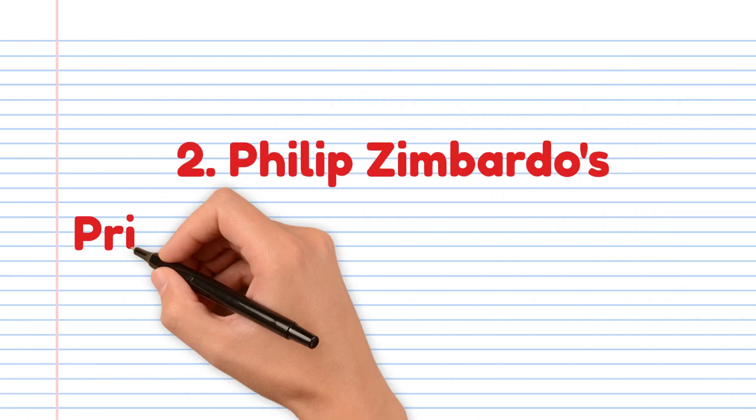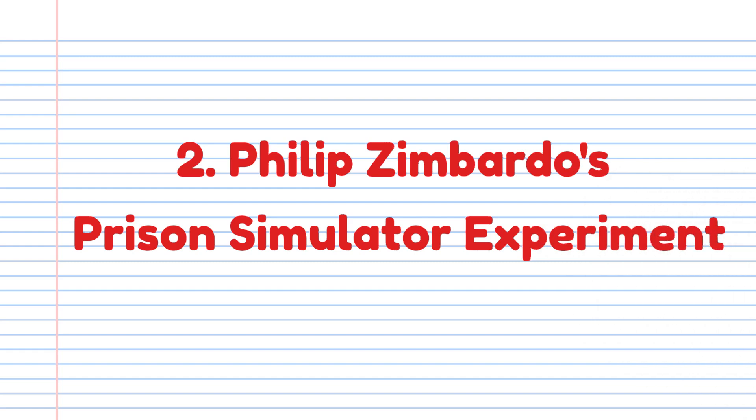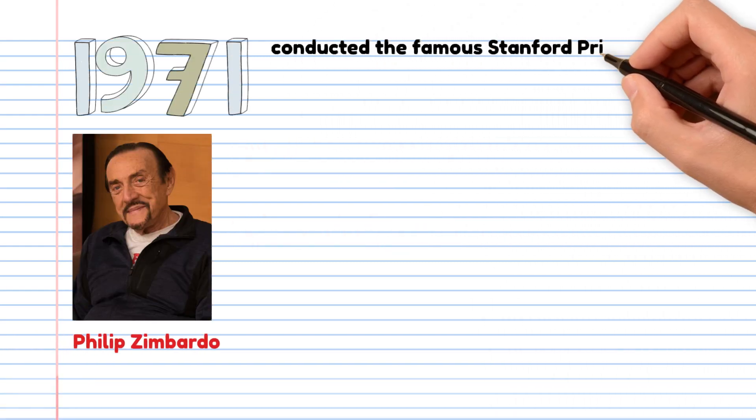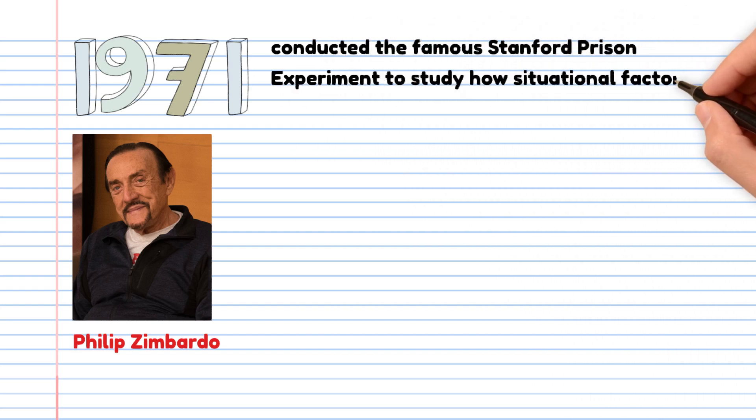Philip Zimbardo's Prison Simulator Experiment. In 1971, Philip Zimbardo conducted the famous Stanford Prison Experiment to study how situational factors can influence people's behavior.